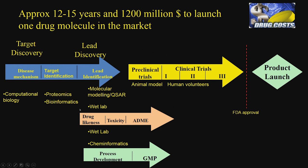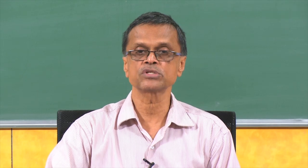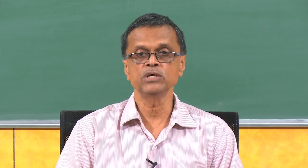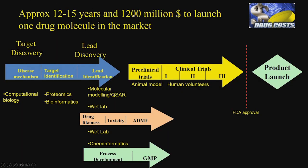It may cost about 1 billion or even 1.2 billion US dollars to launch one new drug molecule in the market. If it is an already existing drug being used for another disease, that is called repurposing — for example, aspirin was originally introduced for fever, then pain, and later is used widely for blood thinning. Repurposing would not cost as much. A new drug takes about 12 to 15 years — a very long process. We start with computational biology studies.